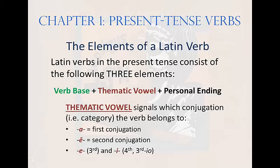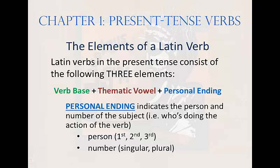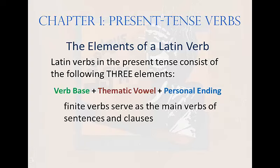The thematic vowel signals which conjugation the verb belongs to. A is the thematic vowel for the first conjugation; long E is the thematic vowel for the second. Short E signals third conjugation, and I signals fourth and third I-O. A verb belongs to one conjugation only, and which conjugation must be memorized with each verb. The personal ending indicates the person and number of the verb. Personal endings are attached only to finite verbs — verbs with personal endings — as opposed to infinitives, which have no endings. Finite verbs serve as the main verbs of sentences and clauses.